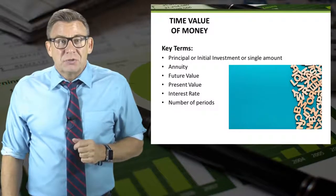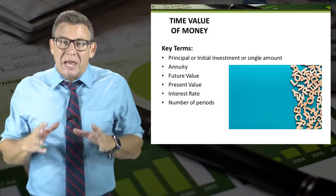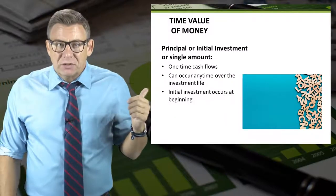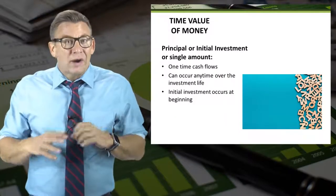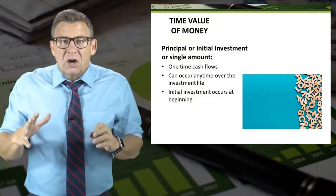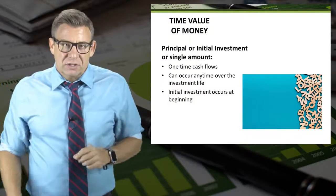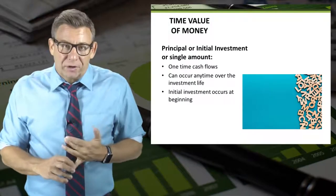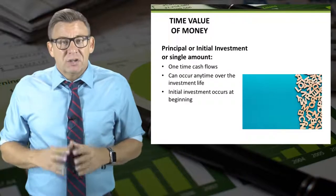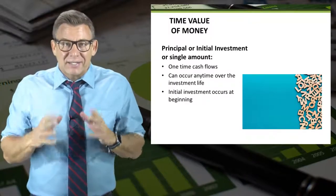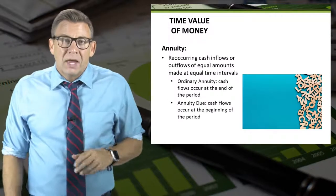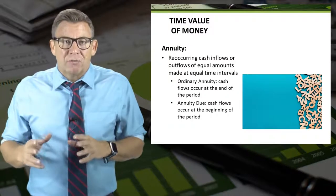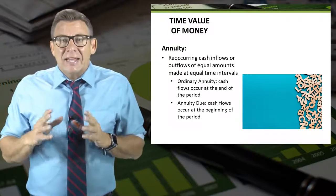Let's wrap up this video by learning some terms that will be used when we apply time value of money to capital budgeting. The principal amount, the initial investment, or a single amount are one-time cash flows. They can occur anytime over the life of the project and can be an inflow or an outflow. However, the initial investment occurs at the beginning and it is a cash outflow.